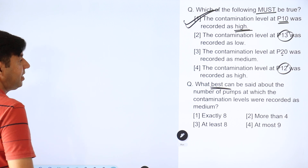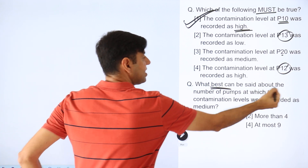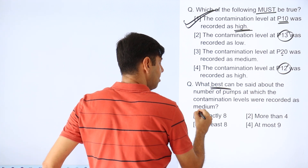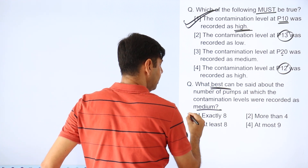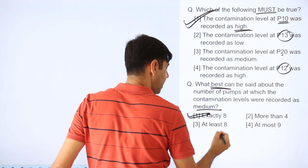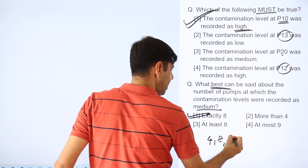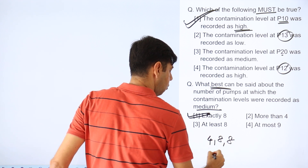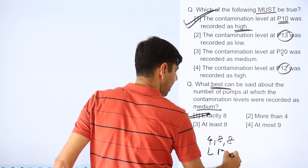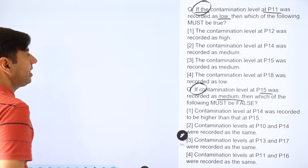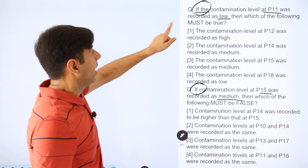The next question: what best can be said about the number of pumps where contamination was medium? Medium was exactly 8, because we have L = 4, M = 8, H = 8. So exactly 8 medium pumps.